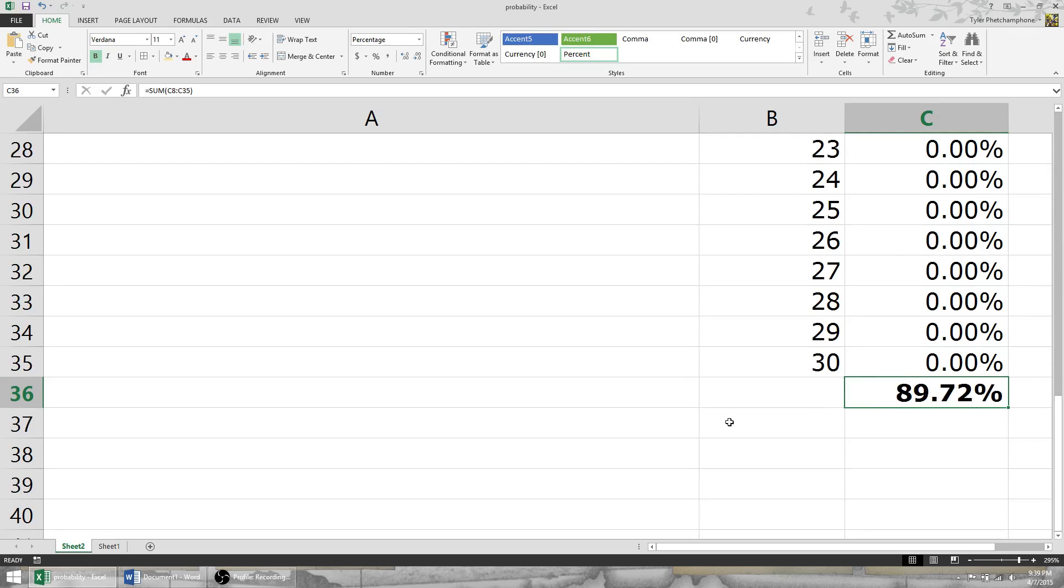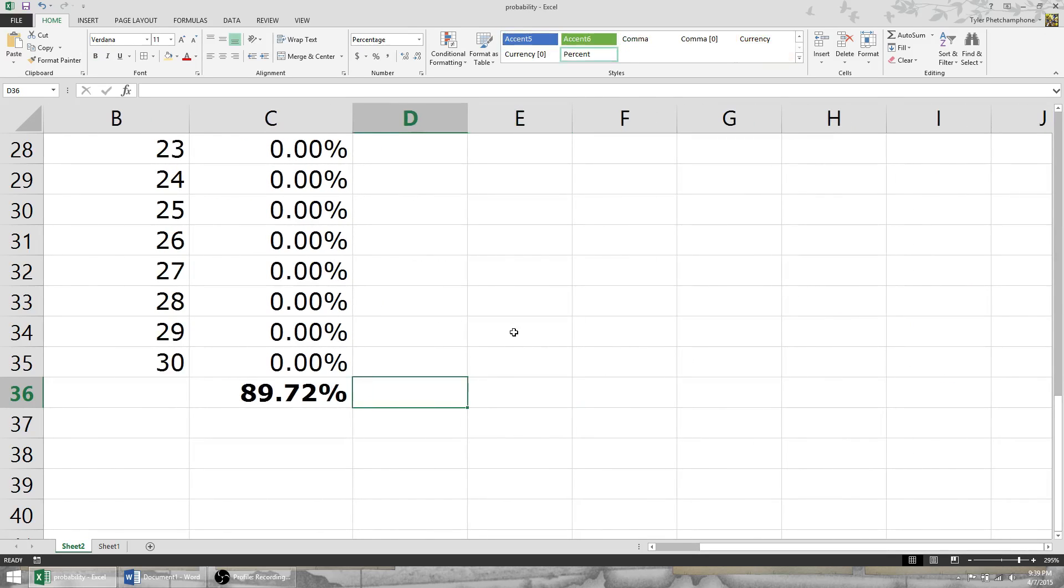That's 89.72%. To answer our question of what's the percent chance of generating a rainbow board for our light Raw? Well, all you have to do is take this number and multiply it into itself six times, each time representing a color.